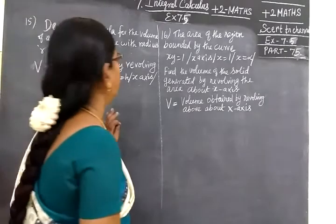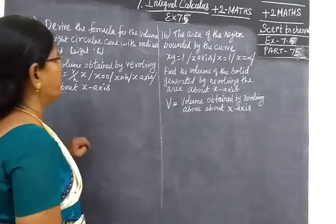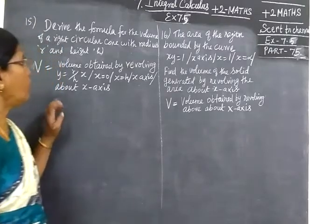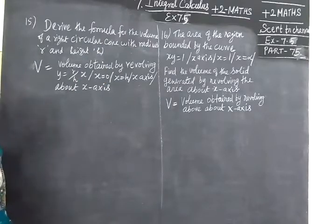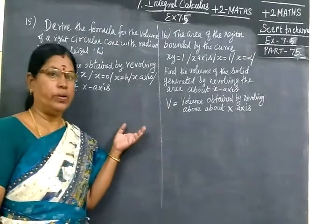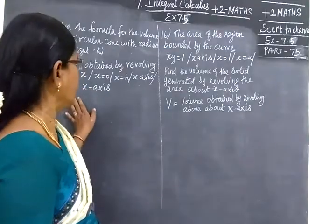Now, part 75. This is the 15th and the 16th problem. Derive the formula for the volume of a right circular cone with radius R and height H. The volume of a cone equals 1/3 πR² times H. R equals derived 1.